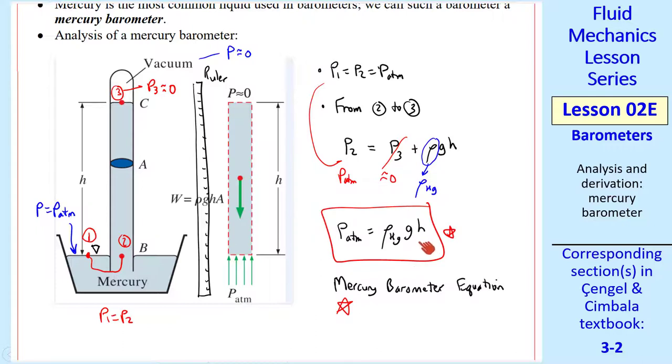h, as you may recall, is a head, an equivalent column height. Keep in mind that this is an absolute pressure.